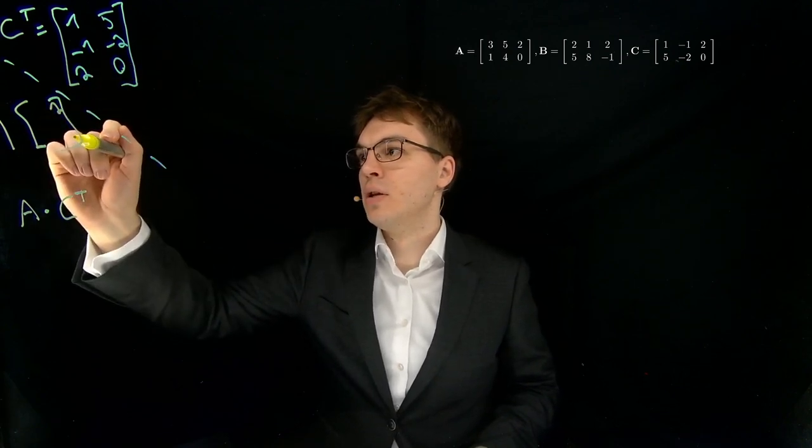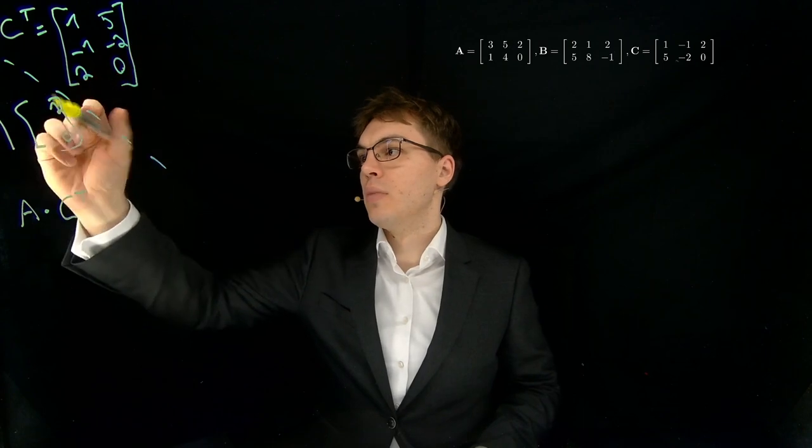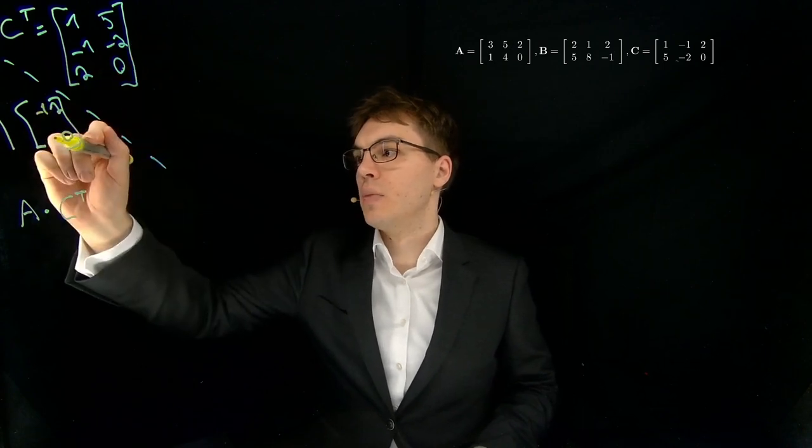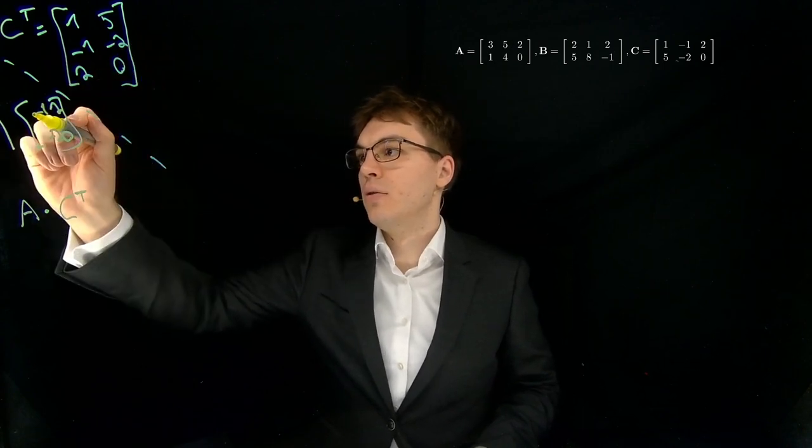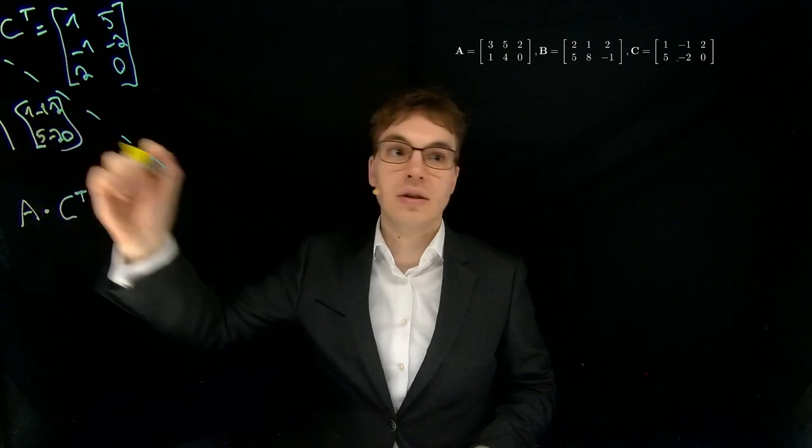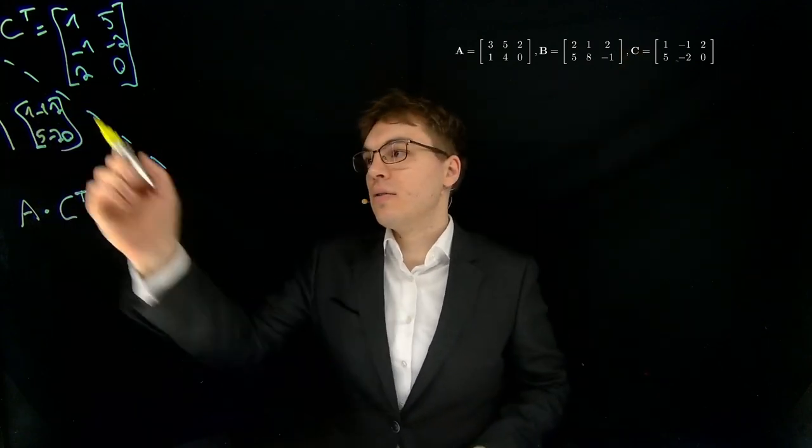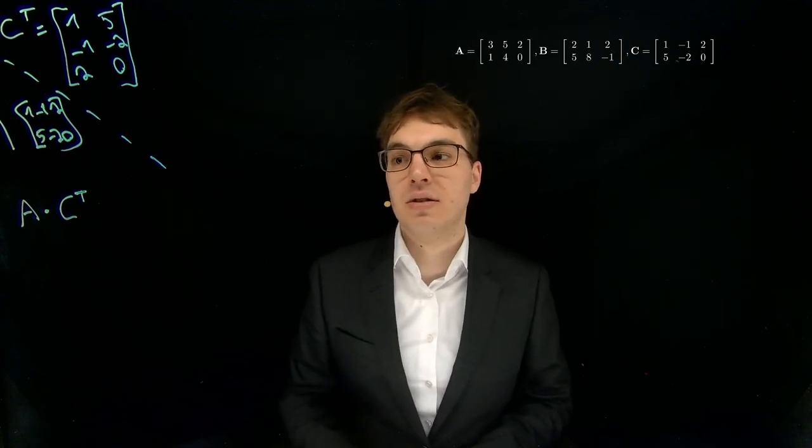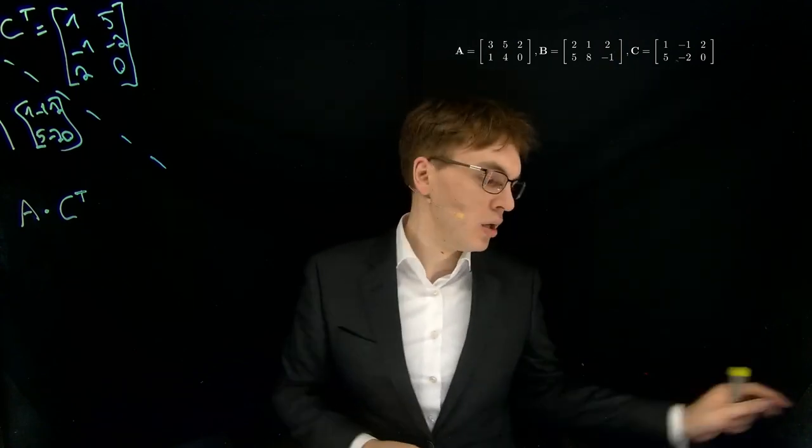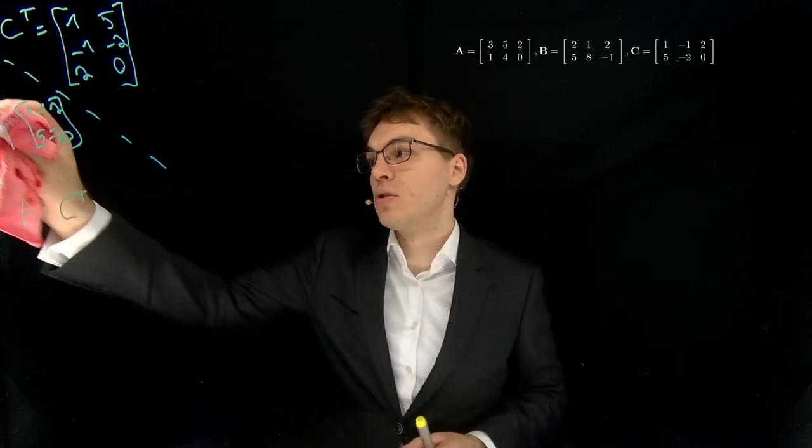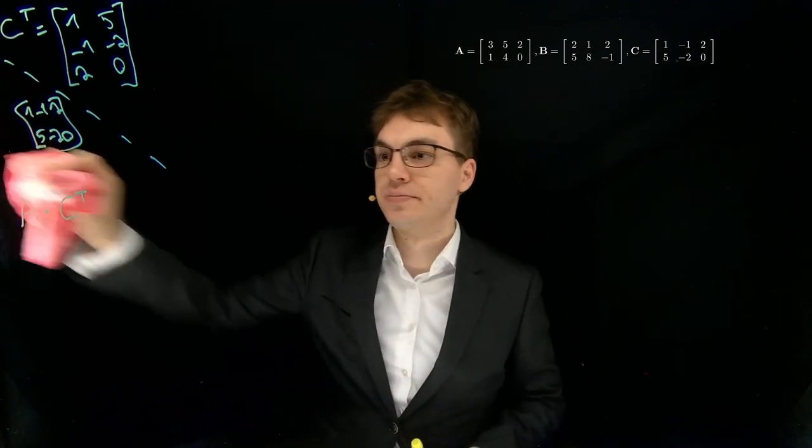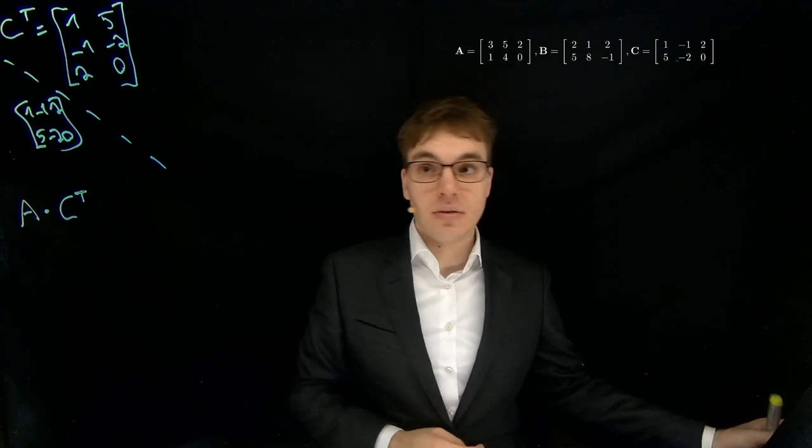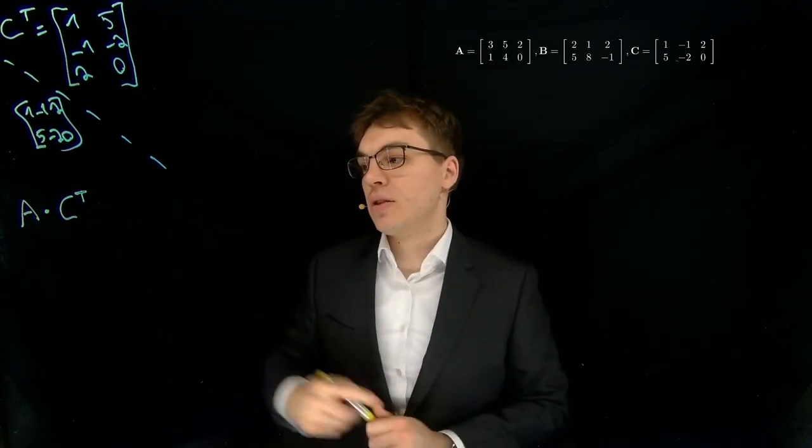You would get the 0 here, the minus 1 here, the minus 2 here, the 1 here, and the 5 here. And this is our original matrix. So this is just flipping on a diagonal axis. But you can imagine this as swapping the role of rows and columns. So now our second step is actually computing this matrix product.